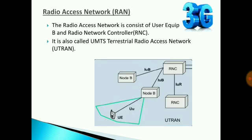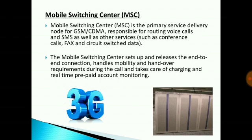This is the network interfaces with description. The Radio Access Network consists of user equipment, Node B, and RNC. It is also called UTRAN — Universal Terrestrial Radio Access Network.